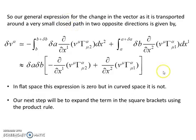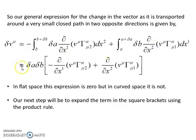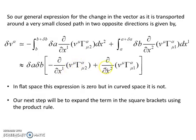A general expression for the change in the vector as it transports around a closed loop — the end result comparing the two different paths — is this object here. This is all that remains because things from the previous page cancelled out, and we are just left with these first-order derivative terms. That expression is approximately equal to delta A times delta B — the area of the little rectangle — times this expression. In flat space this would all be zero, but in curved space it is not. The next step is to expand these derivatives using the product rule, which will lead us to the formula for the Riemann curvature tensor.